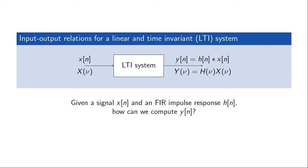The discrete time Fourier transform gave us an alternative view of such a system, which stated that if we have the discrete time Fourier transform of the input signal, then the transform of the output is given by the transform of the input times the discrete time Fourier transform of the impulse response, also known as the frequency response of the system. So this gave us, instead of the convolution, a multiplicative view of what the system does to a particular input, and it led to separating this effect in terms of frequencies.